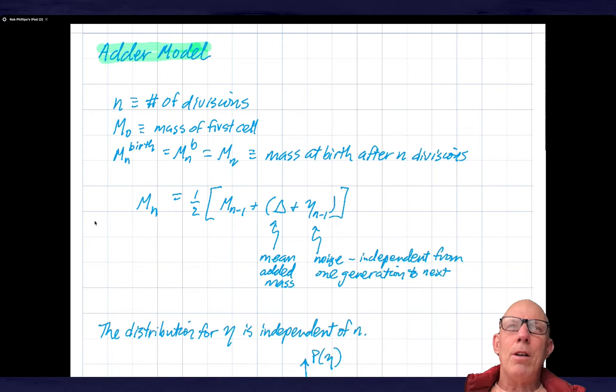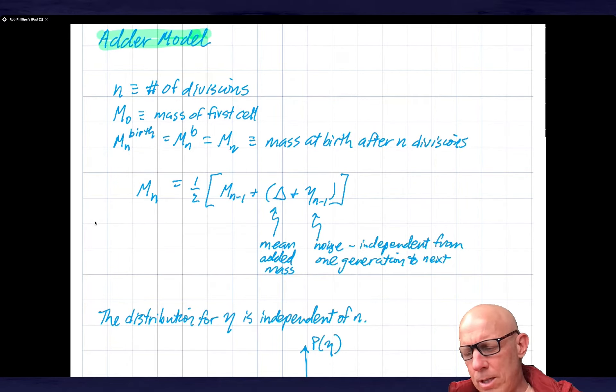Welcome to the continuation of our thinking about the question of how cells maintain the same size over many generations. This is a super interesting question and the kind of thing that's easy to take for granted. We already worked through the timer model and found it wanting because the fluctuations increased with increasing numbers of generations.